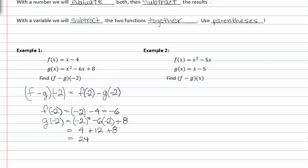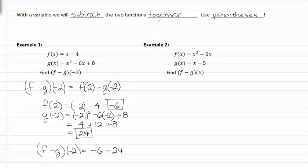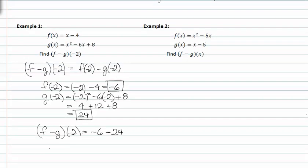Now that we've found f of negative two and g of negative two, we can find f minus g of negative two, which is negative six minus twenty-four. So f minus g of negative two is equal to negative thirty.